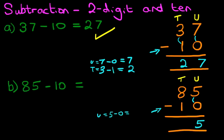Now, we're going to do the tens. What is 8 minus 1? 8 minus 1. That's right. It is 7. And that's it. We have our answer. 85 minus 10 is 75. That is correct.